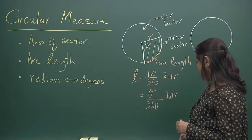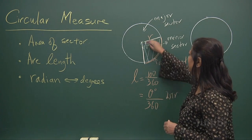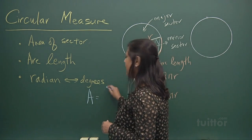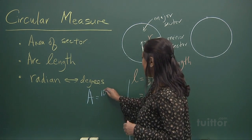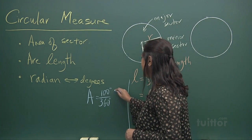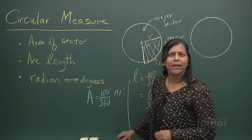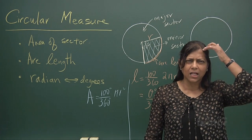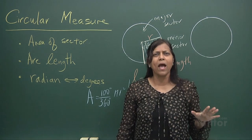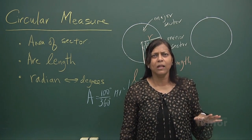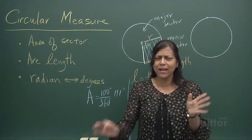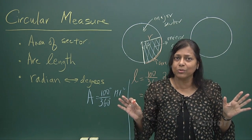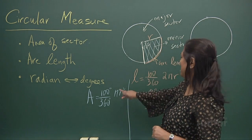Now, if we talk about the area of this whole sector — the area will be equal to an angle fraction. If it's 100 degrees again, it's 100 over 360 degrees times πr². It's a fraction of a circle, and this should not be a headache. How do you get the area of a circle? Area of a circle is πr², which you learnt in primary school.